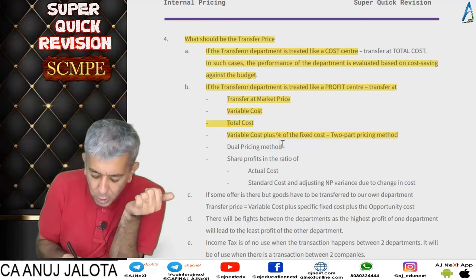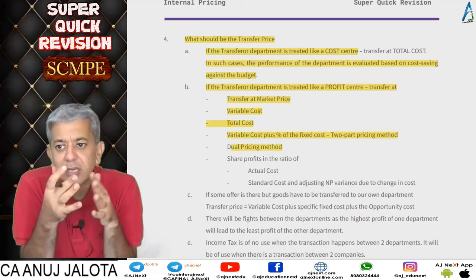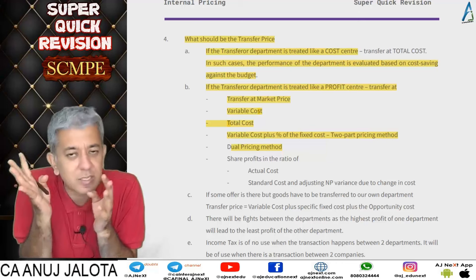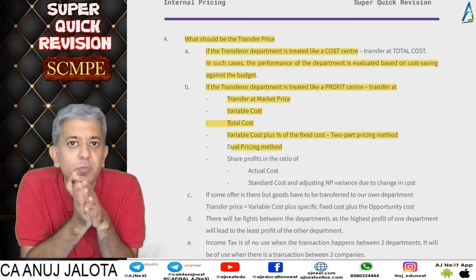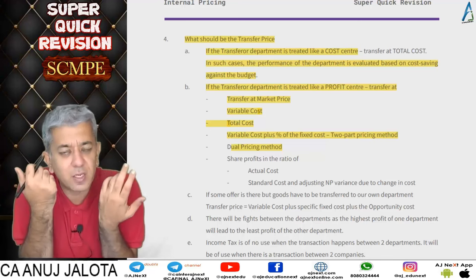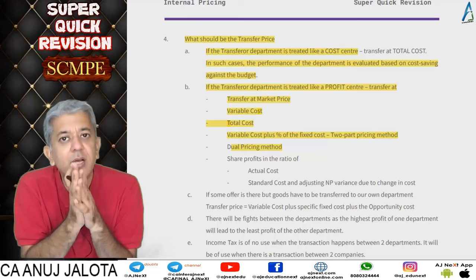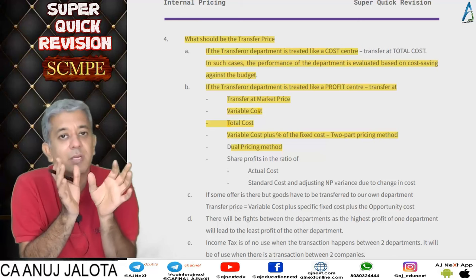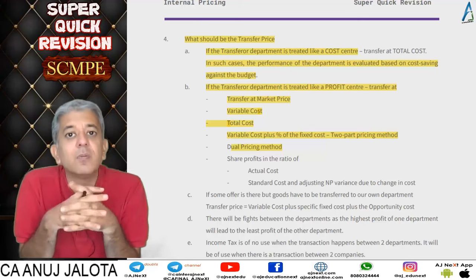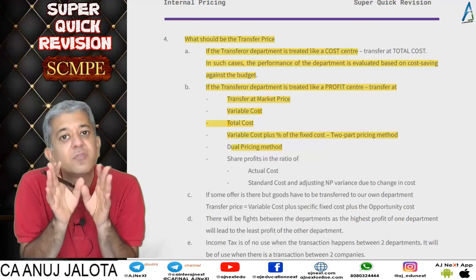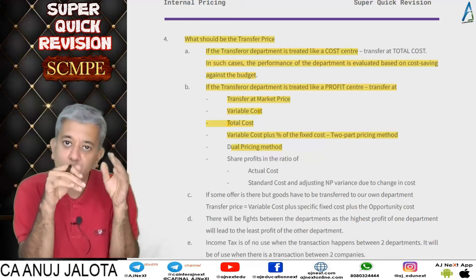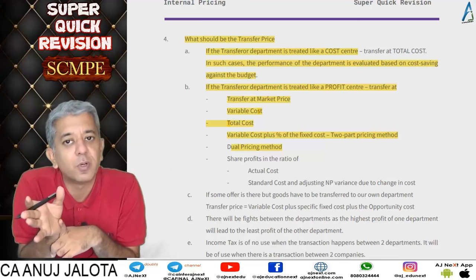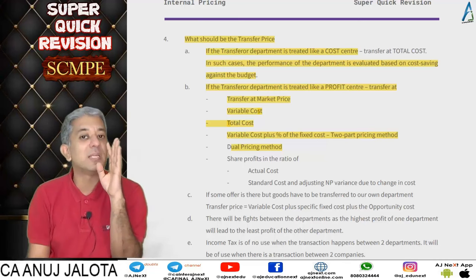The dual pricing method is followed when there is a lot of conflict between divisions. The first division could have sold in the market; the second division says it needs cheaper goods or it can't function. In that case, when making the first division's income statement, we write market price, but in the second division's income statement, cost is recorded as variable cost. So the first division is happy with market price evaluation, the second division is happy with variable cost.